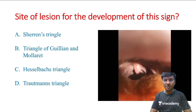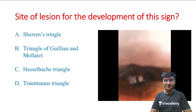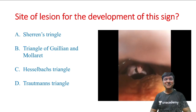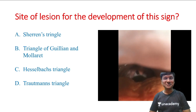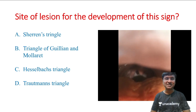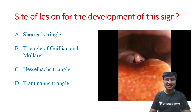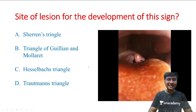Now you can observe clearly. That is the clinical sign — you have to identify where the site of lesion is for the development of that particular sign. The sign you have observed is palatal myoclonus. For the development of palatal myoclonus, the site of lesion is in the Triangle of Guillain and Mollaret.